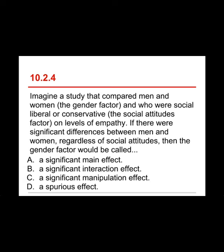Question four: imagine a study comparing men and women — the gender factor — who were socially liberal or conservative — the social attitudes factor — on levels of empathy. If there were significant differences between men and women regardless of social attitudes, the gender factor would be called — a) a significant main effect, b) a significant interaction effect, c) a significant manipulation effect, or d) a spurious effect. The answer is a) a significant main effect — that is when a factor is associated with differences in means across all of the other factors. A significant interaction would be when the effect of gender depended on the level of social attitudes. A spurious effect means it's just an accident, like a type one error.